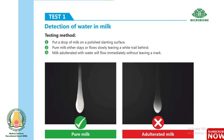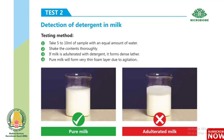Test 2: Detection of detergent in milk. Take 5 to 10 ml of sample with an equal amount of water and shake the contents thoroughly. If milk is adulterated with detergent, it forms dense lather. Pure milk will form only a very thin foam layer due to agitation.